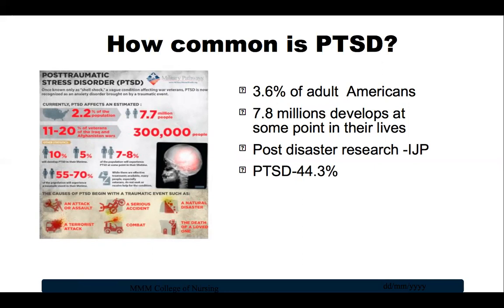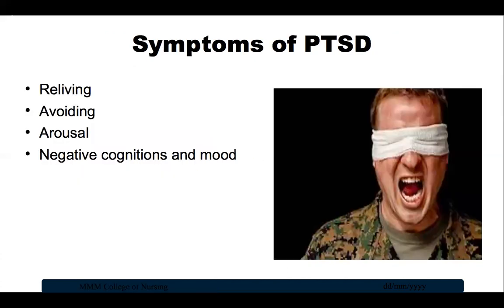Women may be more likely to develop PTSD because they are more likely to be victims of domestic violence, abuse, and rape. A post-disaster research study published in the Indian Journal of Psychiatry, conducted among people in Orissa, found that there was a PTSD rate of 44.3% among people affected by the tsunami. The symptoms of PTSD most often begin within three months of the event.